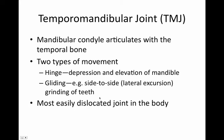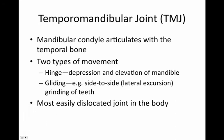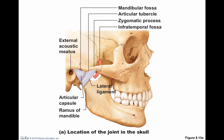The temporomandibular joint, or TMJ, is where the mandibular condyle articulates with the temporal bone. There are two types of movement: a hinge movement and a gliding movement. Lateral excursion is what you see when people grind their teeth. Usually the pterygoid muscles tied into the pterygoid portion of the sphenoid are involved. It's the most easily dislocated joint in the body, often because of the jaw's anterior projection. TMJ problems can include ringing in the ears due to the proximity of the mandibular fossa to the ear.